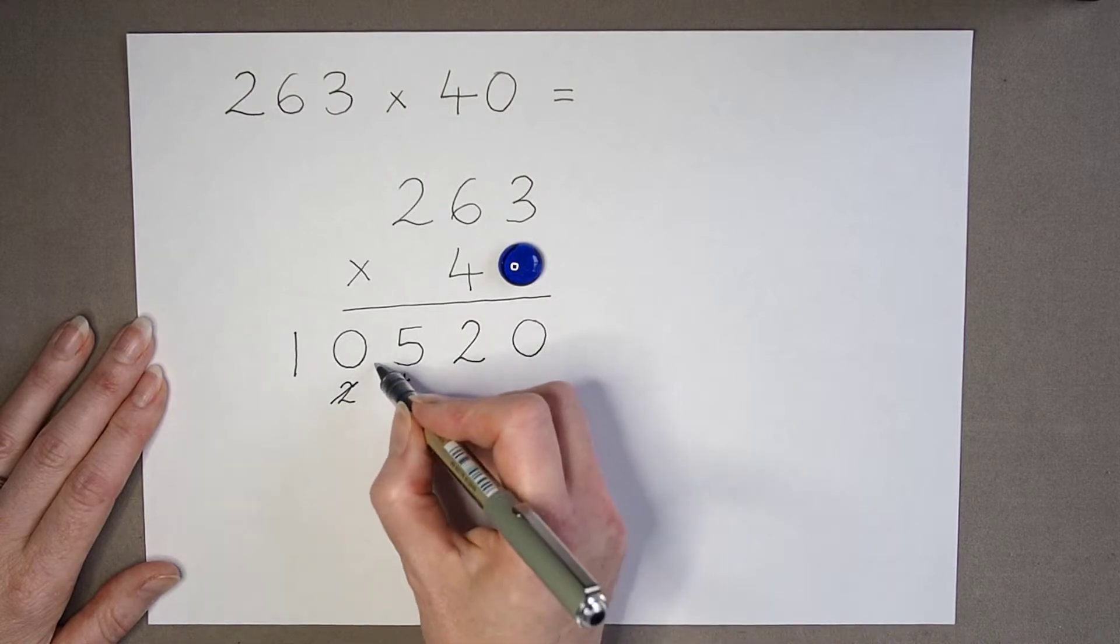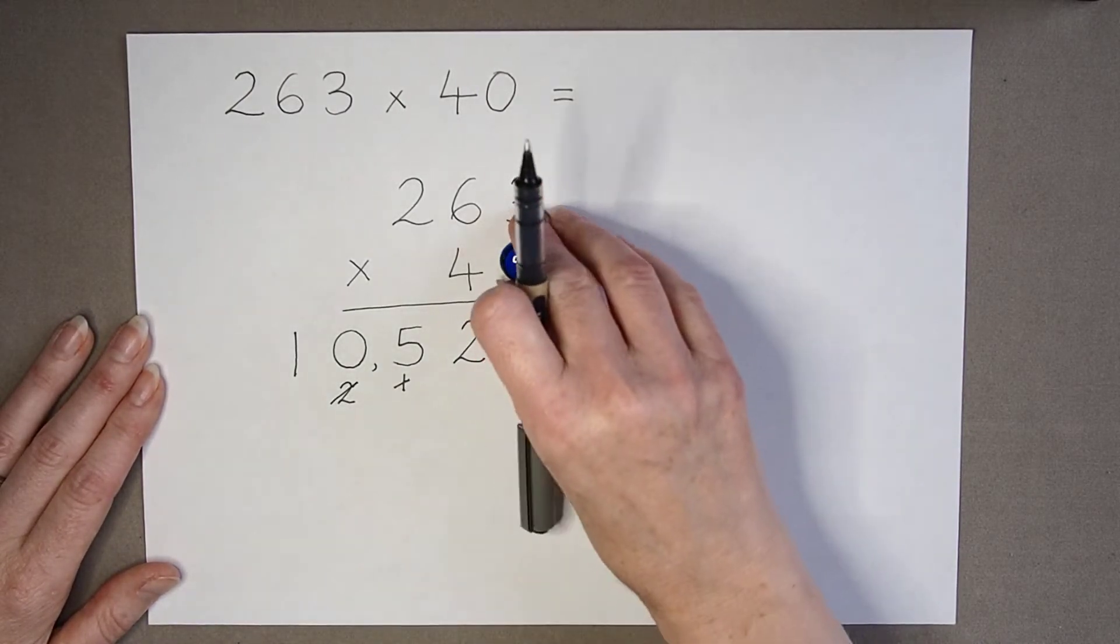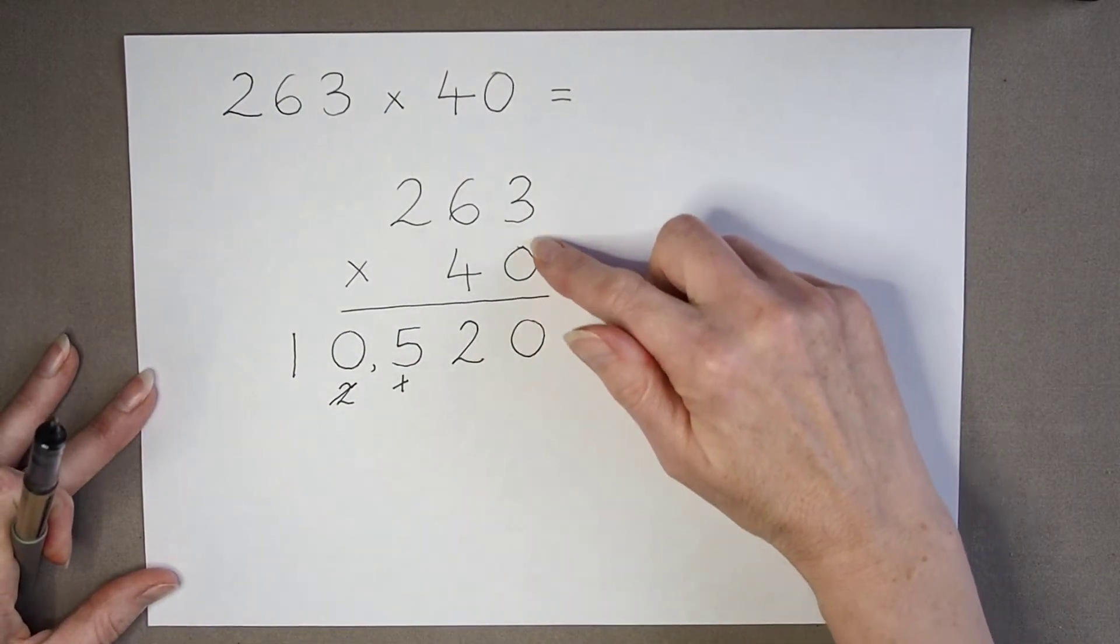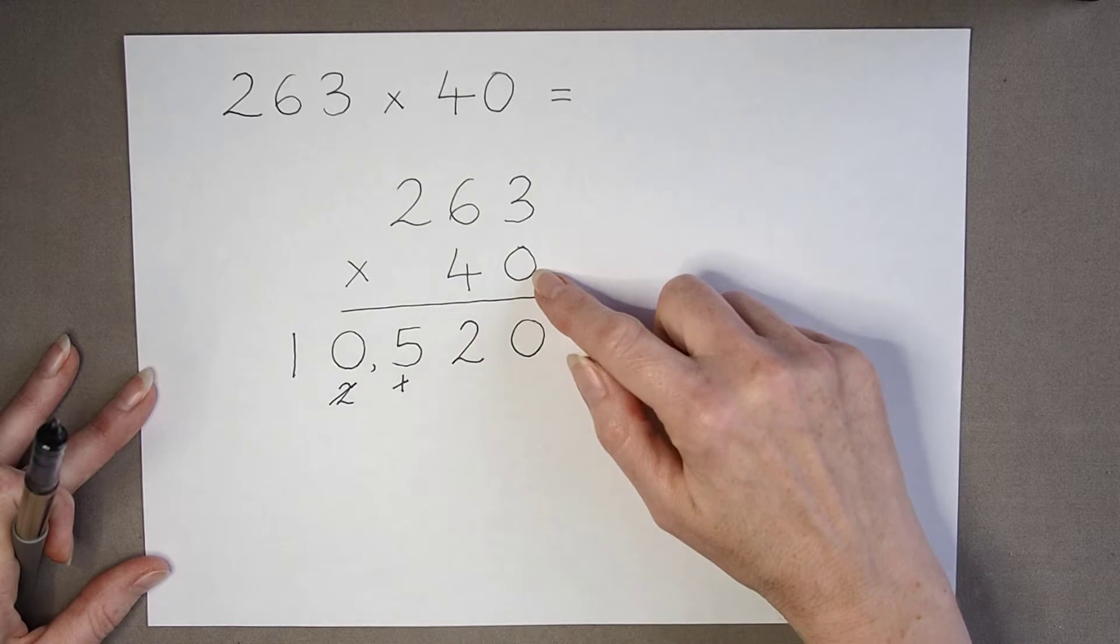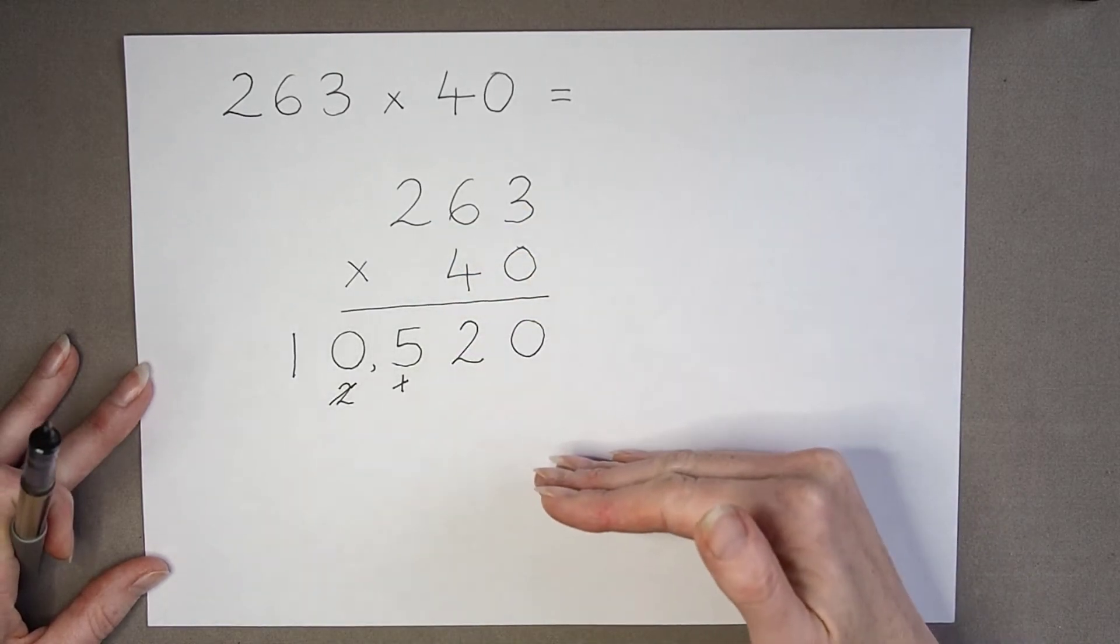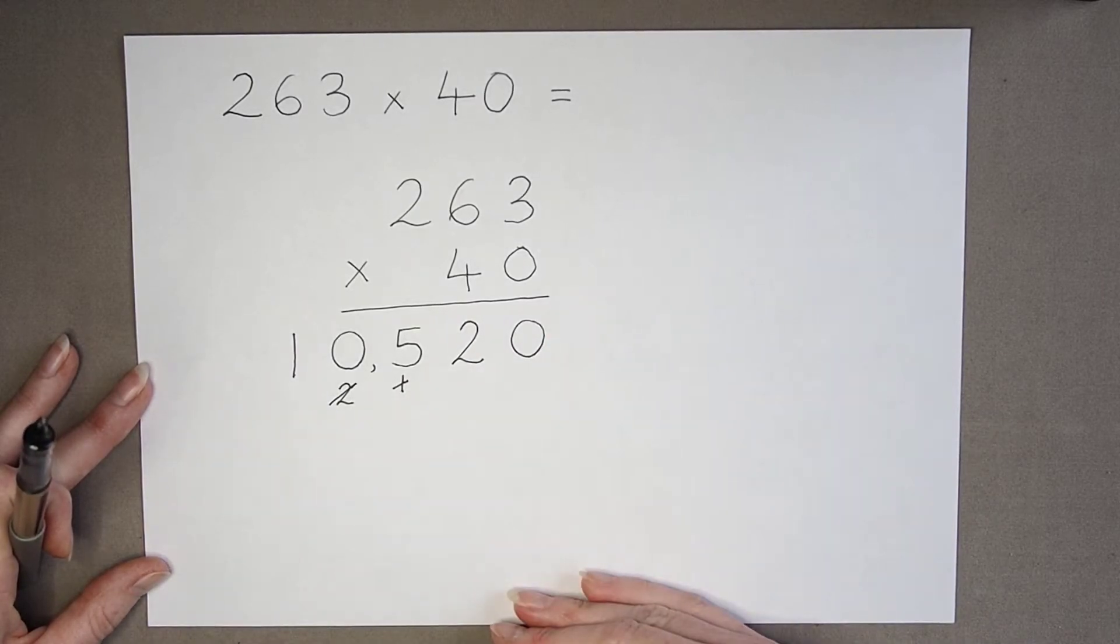So my answer is 10,520. So by ignoring this 0 and not needing to work out the multiplication for the units, it just saves us a row of working. It means we don't have to have a row of 0s and then do addition at the end.